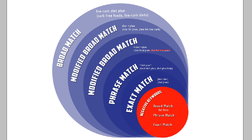We're going to put the negative keyword 'fat-free,' and you'll see it knocked out a term under modified broad match. Then we'll put 'food plan' as a phrase match negative keyword, and you'll notice it knocked out another term. Lastly, we'll put the exact match 'carb-free foods' as a negative keyword, and you'll notice it canceled out that term — so our ad would no longer show for those three terms, assuming we had added these original keywords to our campaign.